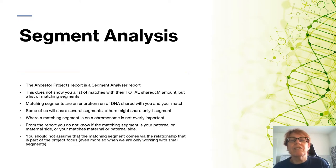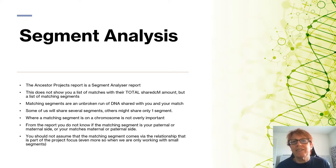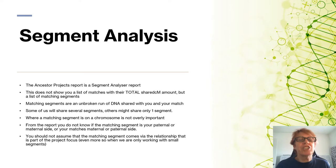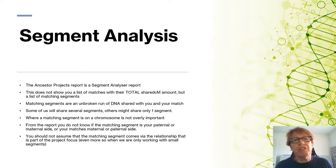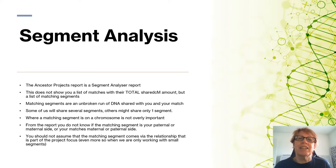When you go to ancestor projects you run a report — it's actually a segment analyzer report. This doesn't show you a list of all the matches with their total shared centimorgan amount; it's just a list of specific segments that you share with people. Matching segments are an unbroken run of DNA shared with you in your match. Some of us could share several segments and others might just share one segment. Where a matching segment is on a chromosome is not overly important for this type of research.